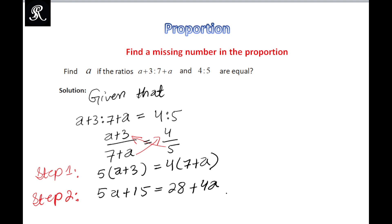From here it will be cancelled out and we will get 5a minus 4a. Then we will shift this to the other side, that would be 28 minus 15.